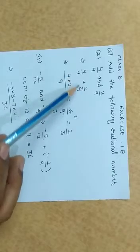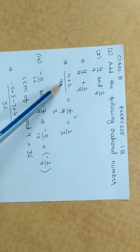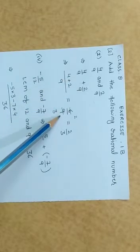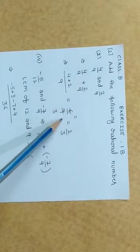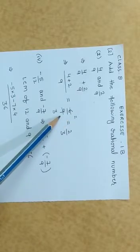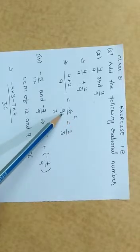So simply add 4 upon 9 plus 2 upon 9, taking LCM 9: 4 plus 2 equals 6 upon 9. Change this fraction into simplest form, divide both numerator and denominator with common term 3. Divide 6 by 3 equals 2, and divide 9 by 3 equals 3, so 2 upon 3 is your answer.